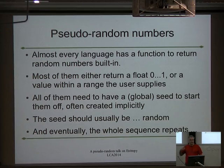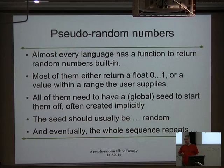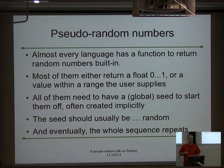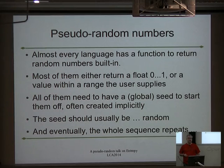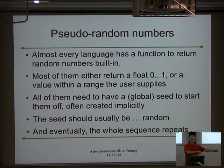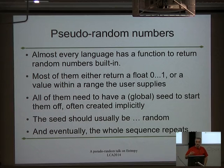Random number generators all have a period — they will all repeat at some point. If you're churning through numbers and number 7 was your second output, eventually you'll get to a state where number 7 comes out again, and this time it's followed by 9 again — the whole sequence starts to repeat. The sequences in good generators are very, very big. But it means you can't just leave the thing running for two or three years, because it's going to start repeating. When it starts repeating, that's when attackers notice — they say, I saw this sequence last year, and now I know every random number you're ever going to produce.